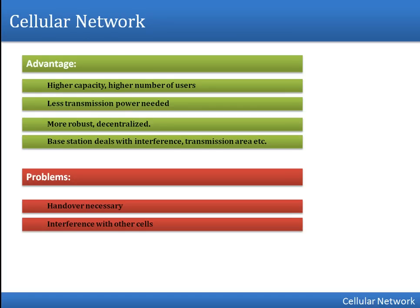The problems with cellular networks: first, as the number of base stations increases, when a user is on an active call and moves from one cell to another there is overhead for transferring the active call from one base station to another — this process is known as handover. Second, interference with other cells: before reusing a frequency you must first verify whether the two co-channel cells are far enough apart.